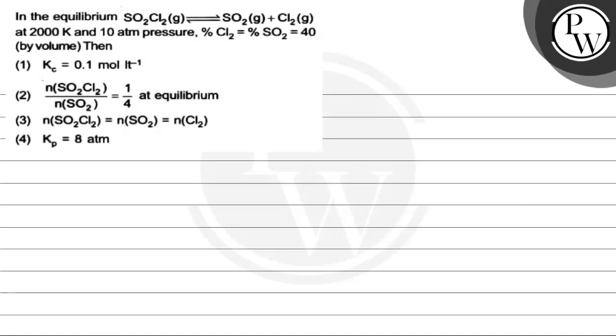Hello guys, let's read this question. SO2Cl2 gas forms SO2 gas plus Cl2 gas at 2000 Kelvin and 10 atm pressure. Percent Cl2 is equal to percent SO2, which is 40 by volume. Then we have 4 options given and we have to find the correct option.